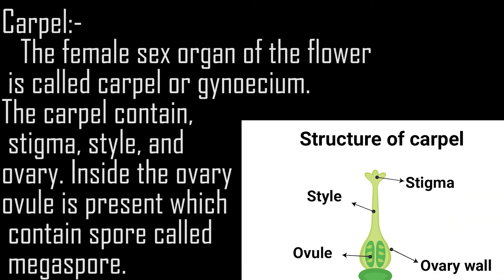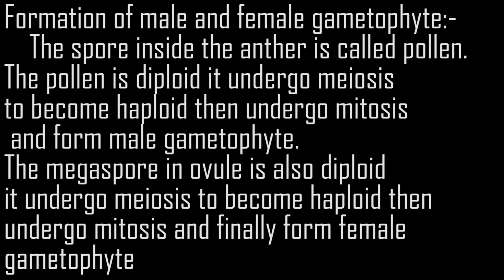Carpel. The female sex organ of the flower is called carpel or gynoecium. The carpel contains stigma, style, and ovary. Inside the ovary, ovule is present which contains a spore called megaspore.